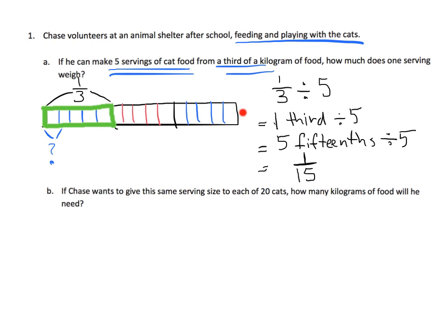We can see that the whole is made up of 15 parts, and we want 1 out of those 15 parts. So the answer is 1 fifteenth of a kilogram. Now question B says, if Chase wants to give this same serving size to each of 20 cats, how many kilograms of food will he need?